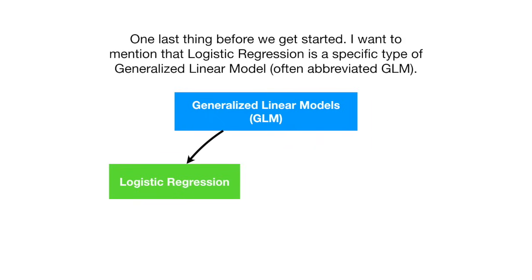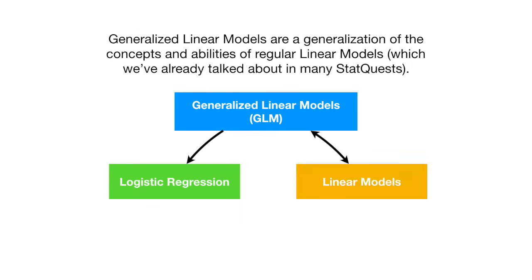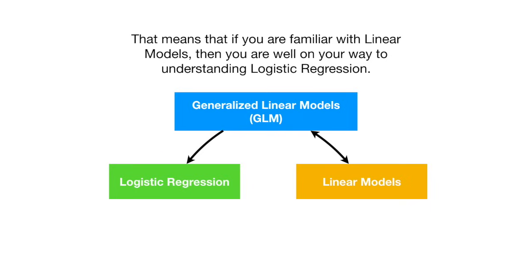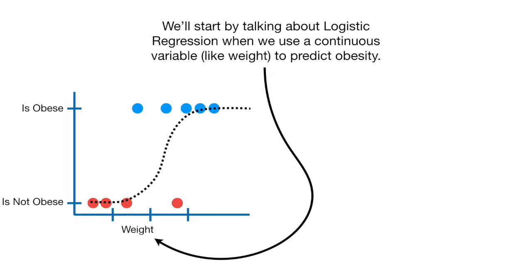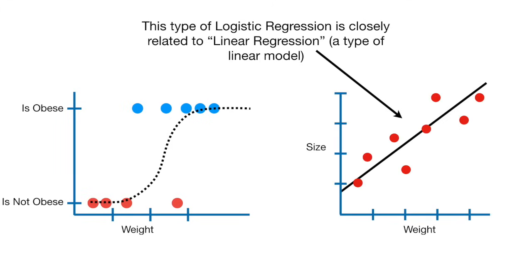One last thing before we get started. Logistic regression is a specific type of generalized linear model, often abbreviated GLM. Generalized linear models are a generalization of the concepts and abilities of regular linear models, which we've already talked about in many StatQuests. That means that if you're familiar with linear models, then you are well on your way to understanding logistic regression. We'll start by talking about logistic regression when we use a continuous variable, like weight, to predict obesity. This type of logistic regression is closely related to linear regression, a type of linear model.